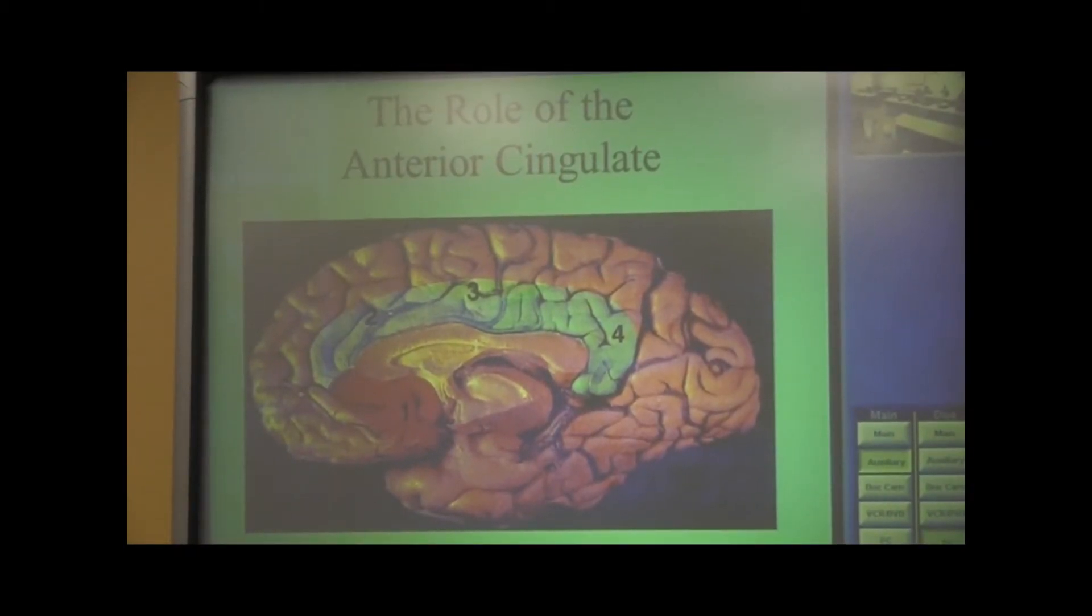These are the frontal lobes here. And this structure sort of wraps around the corpus callosum all the way back here and back to the front of the brain is the cingulate gyrus.